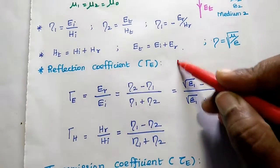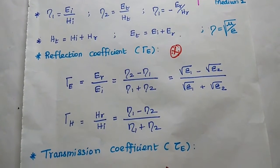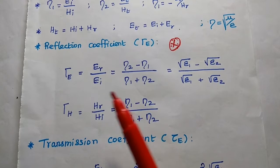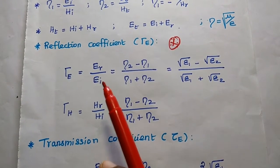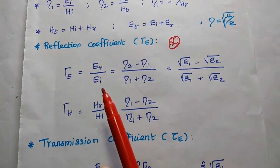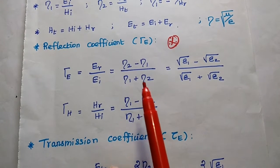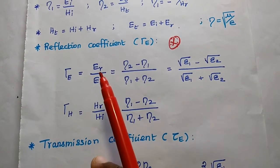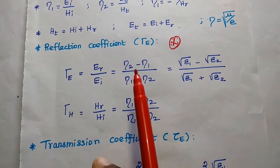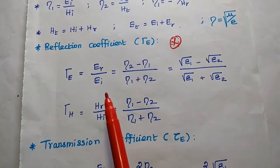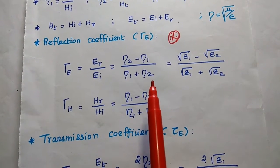These two formulas are very important: the reflection coefficient and transmission coefficient. The reflection coefficient is equal to the ratio of Er to Ei, which can also be represented as eta 2 minus eta 1 divided by eta 1 plus eta 2. So the reflected electric field is proportional to eta 2 minus eta 1, and the incident electric field relates to eta 1 plus eta 2.